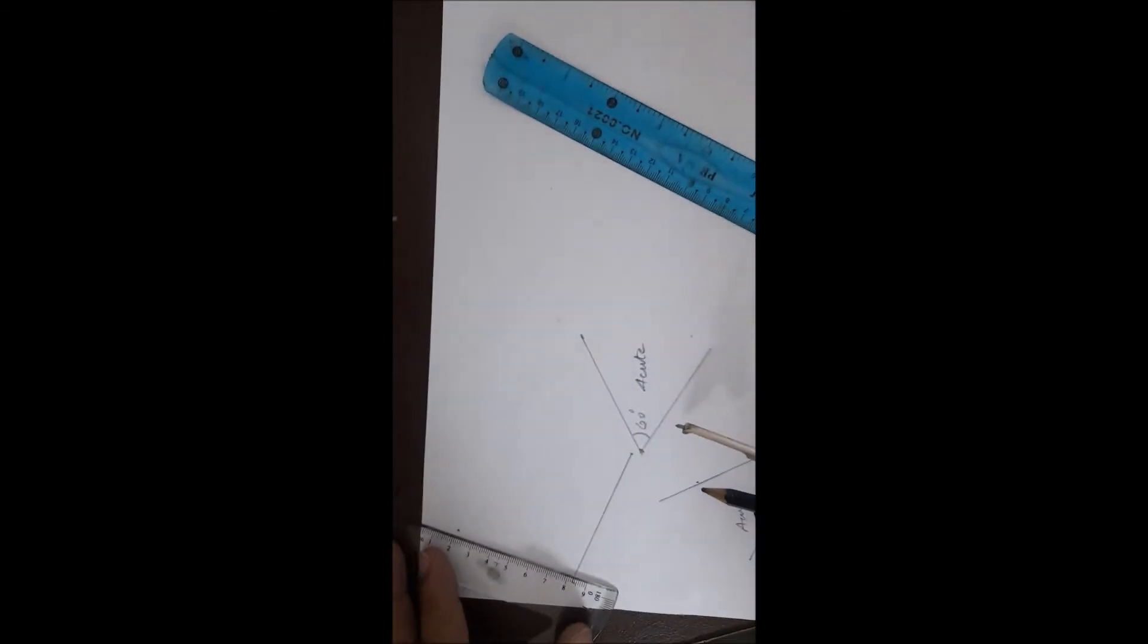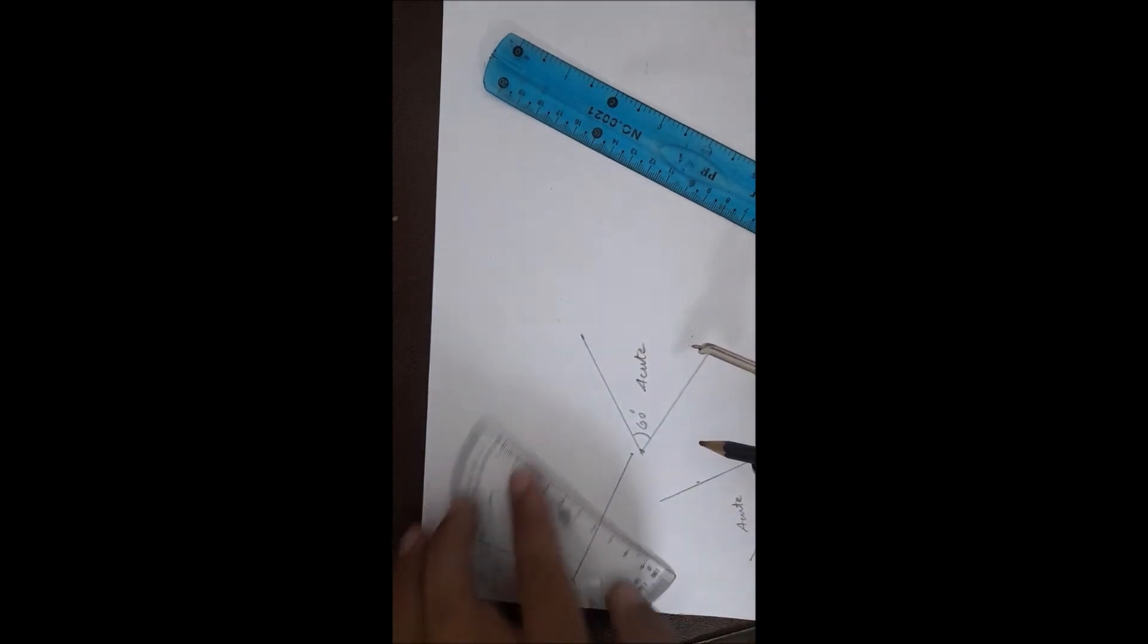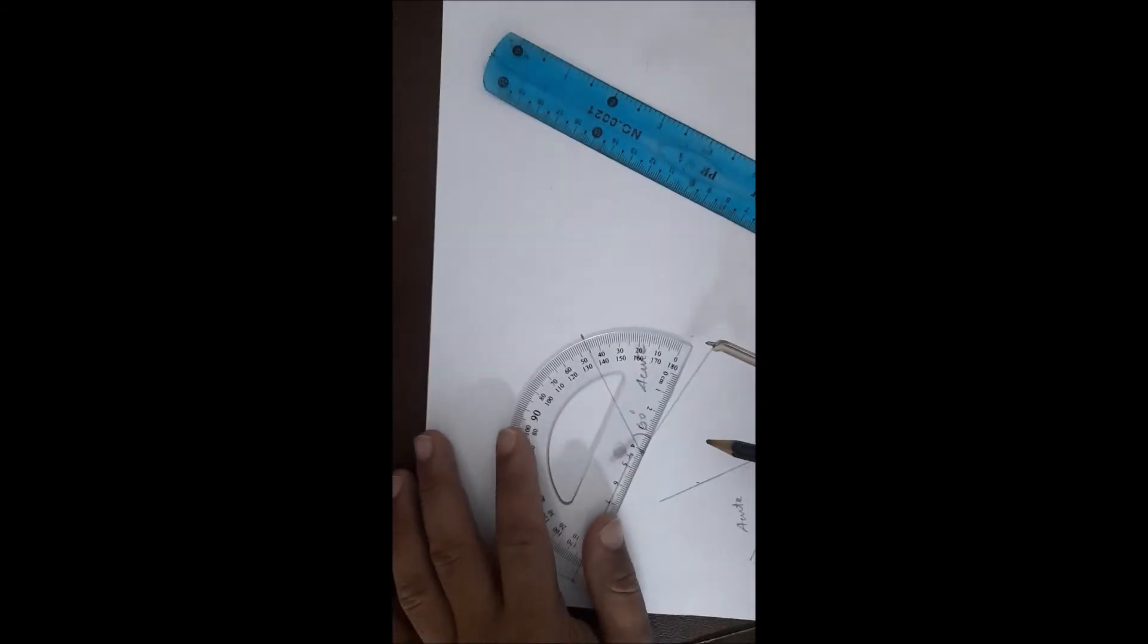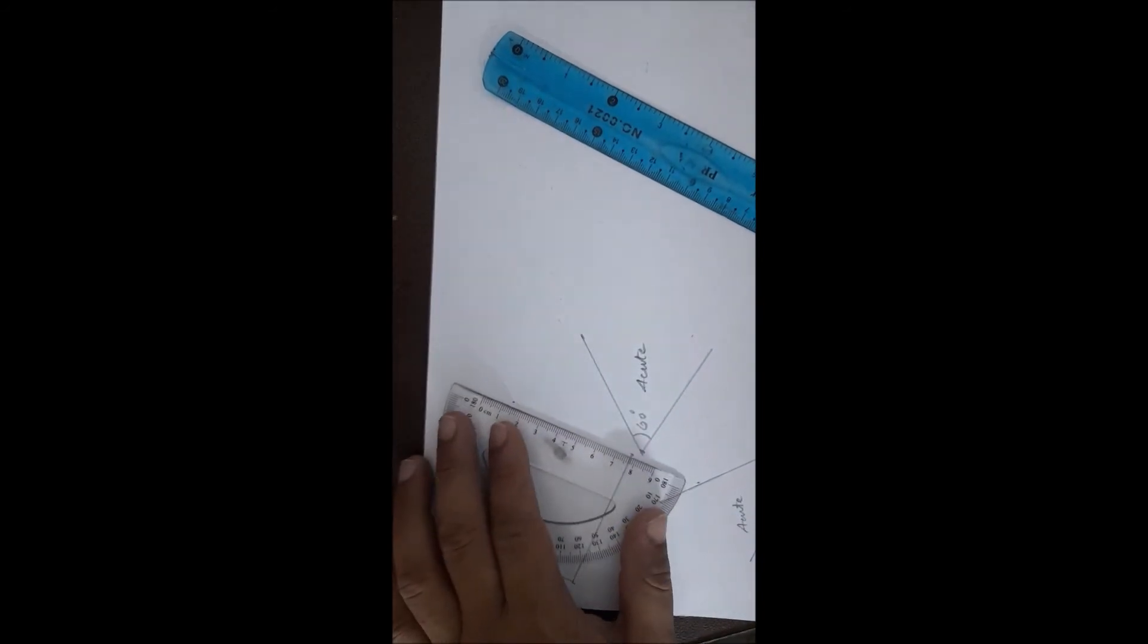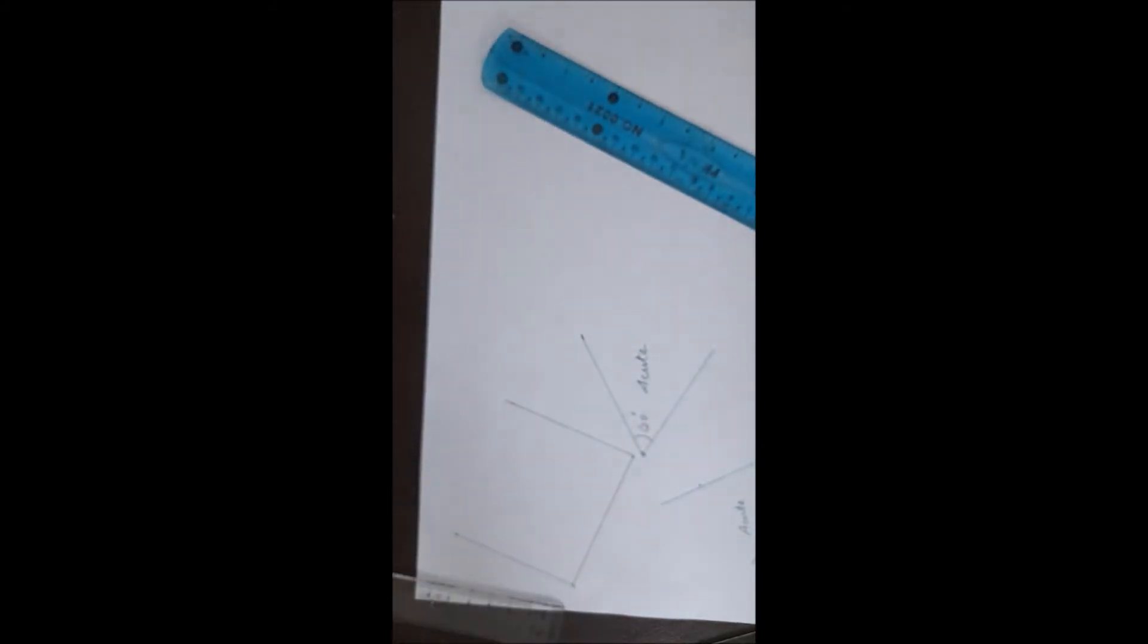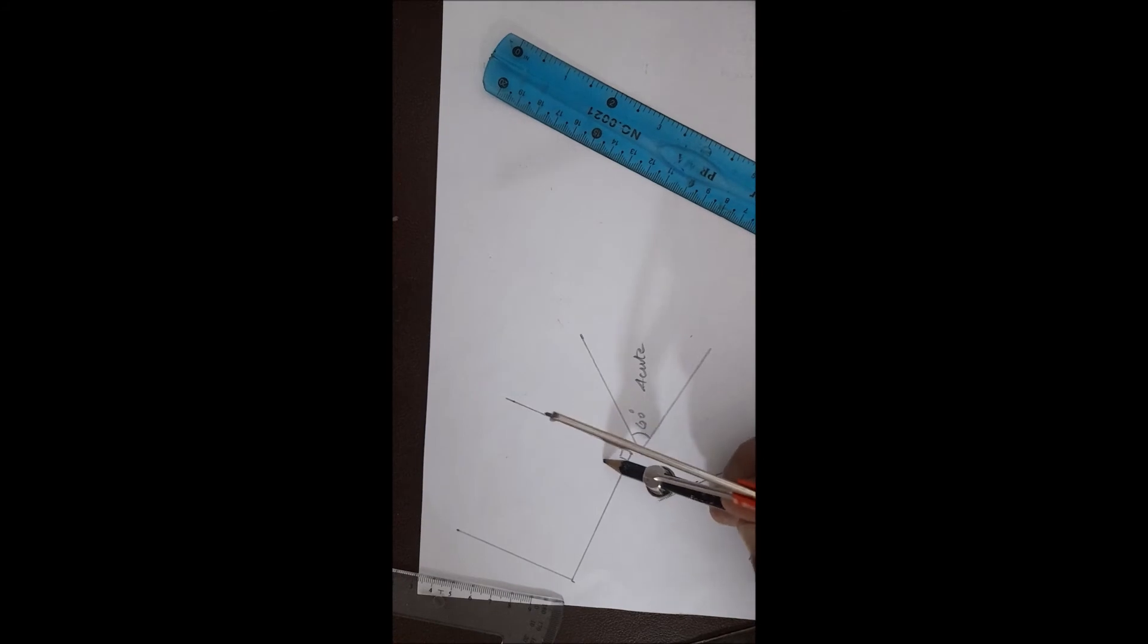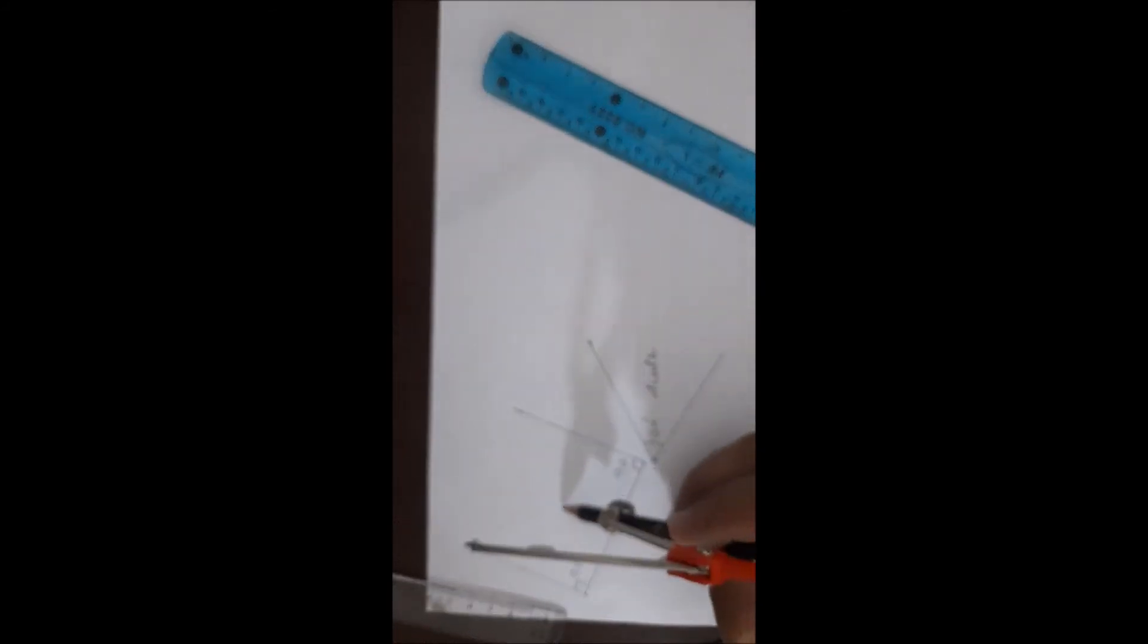Join this dot here. Suppose on this side also I would like to make one, so put here a small dot and try to join them. This is also 90 and this is also 90. They are called right angles.